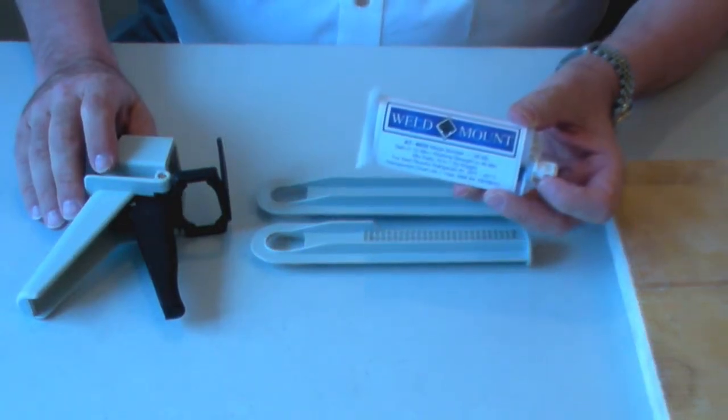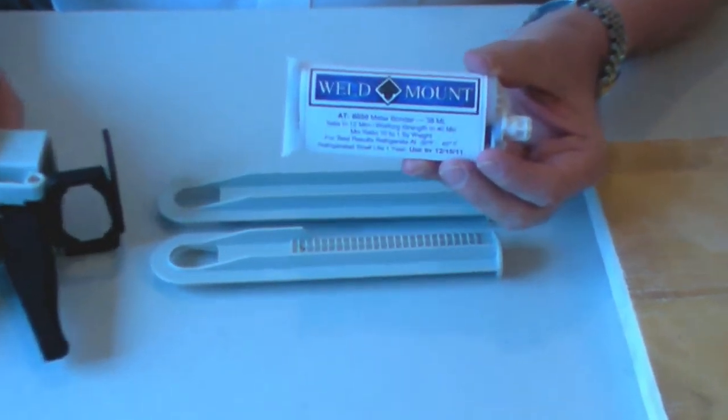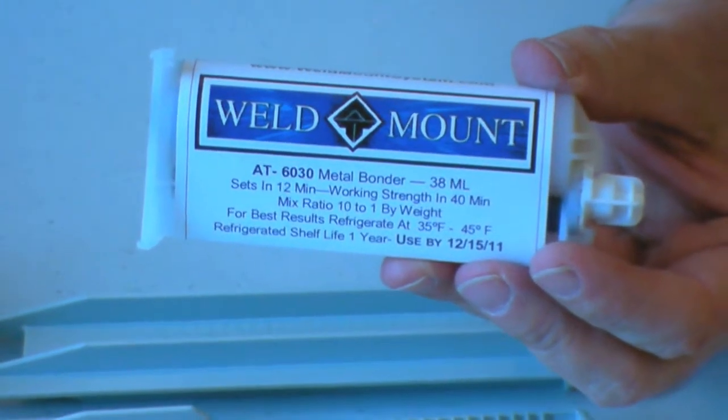AT6030 is a new metal bonder just introduced this year by WeldMount. It's an amazing product that develops up to 3,700 pounds of tensile strength on aluminum and steel surfaces.